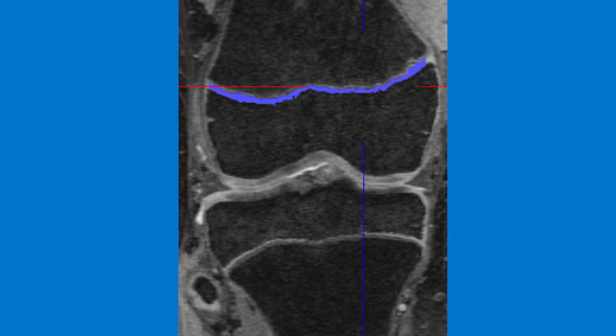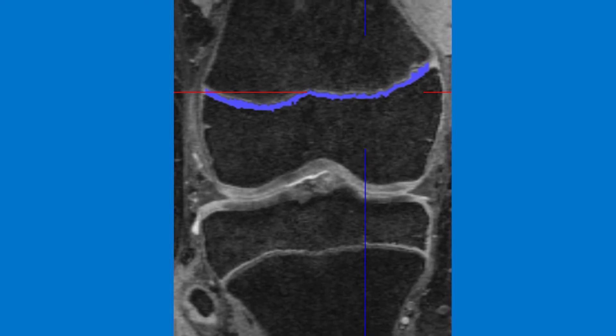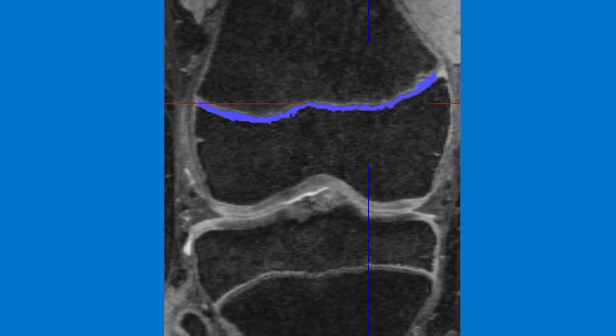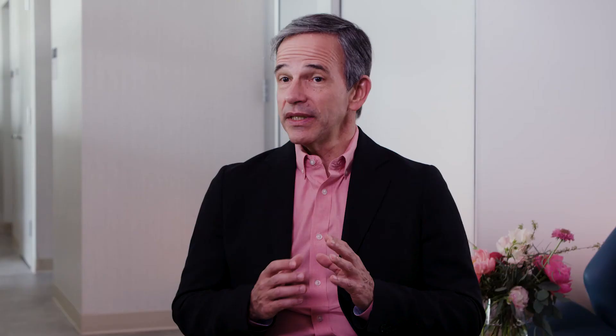MRI is a very good way to look at the cartilage of the growth plate, or physis. And diffusion tensor imaging is a very specialized form of MRI that can tell us about tissue microstructure.